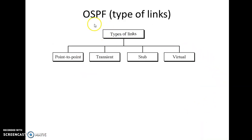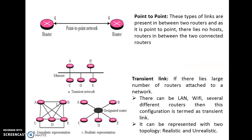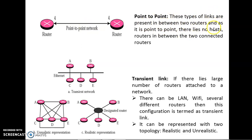OSPF has four different types of links: point-to-point link, transient link, stub link, and virtual link. In a point-to-point link, two routers share a single channel between them. These links exist between two routers, and as it is point-to-point, there are no host routers between the two connected routers. As seen in the diagram, between two routers in a point-to-point link, no host or router is connected between them.